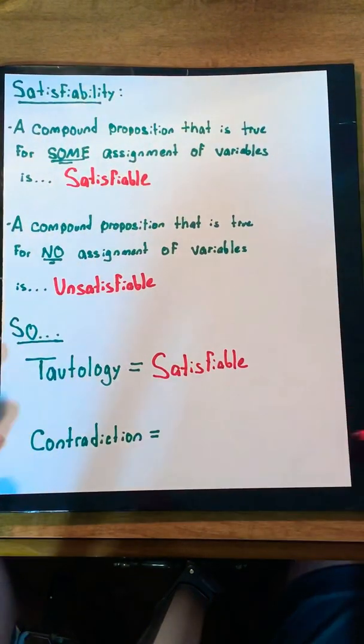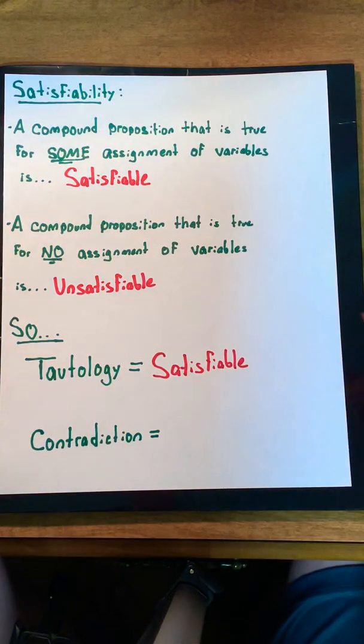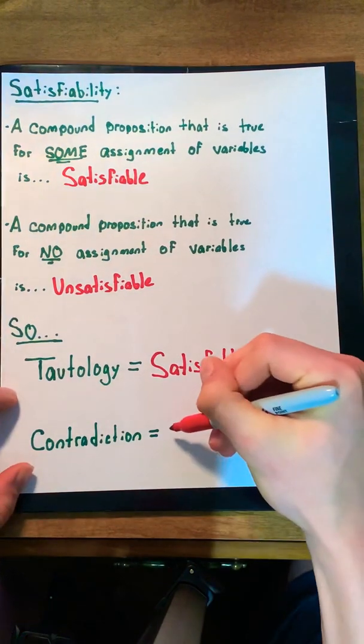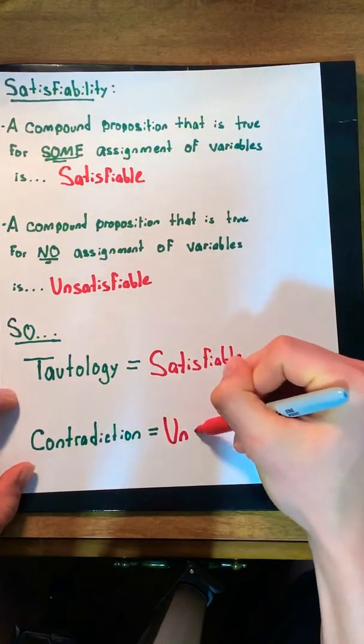On the other hand, we know that a contradiction is always false, and thus, there is no assignment of variables that will make it true. So, it must be unsatisfiable.